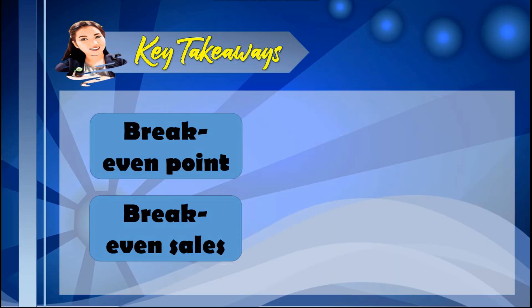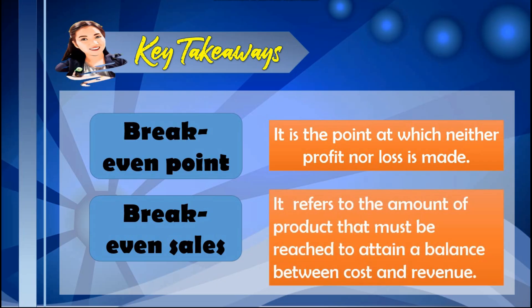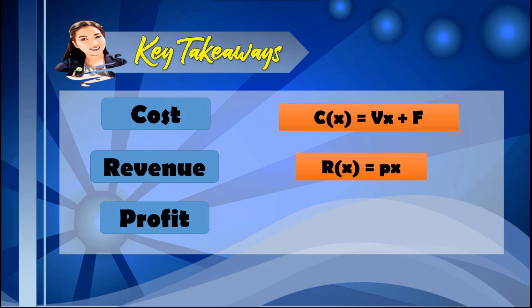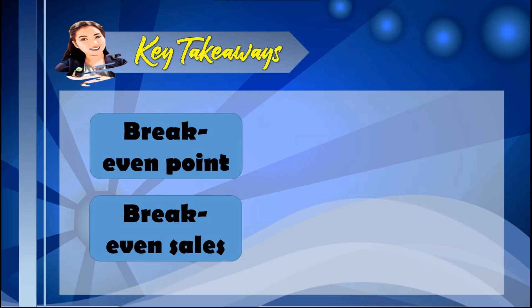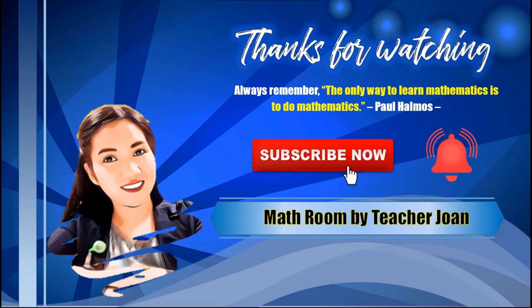Here are the key takeaways in this lesson. Break-even point is the point at which neither profit nor loss is made, and it determines the number of products needed to balance cost and revenue. Break-even sales refers to the amount that must be reached to attain that balance. To find them: cost is C(x) = vx + f; revenue is R(x) = p × x; profit is P(x) = R(x) − C(x). For the break-even point, set R(x) = C(x) or P(x) = 0. For break-even sales, multiply selling price by the break-even point. I hope you have learned a lot about break-even point. Thanks for watching.